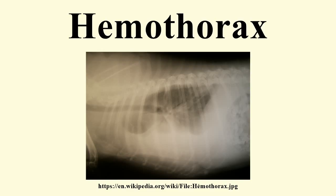Less frequently, haemothorax occurs spontaneously. A major vascular cause of haemothorax is aortic dissection or rupture of thoracic aortic aneurysms. It may also follow surgical intervention in the thoracic area. Infrequently, patients with pneumothorax may develop spontaneous haemothorax. Spontaneous haemothorax or haemopneumothorax may occur with endometriosis, if endometrial tissue implants on the pleural surface and bleeds in response to cyclical hormonal changes in menstruating women.